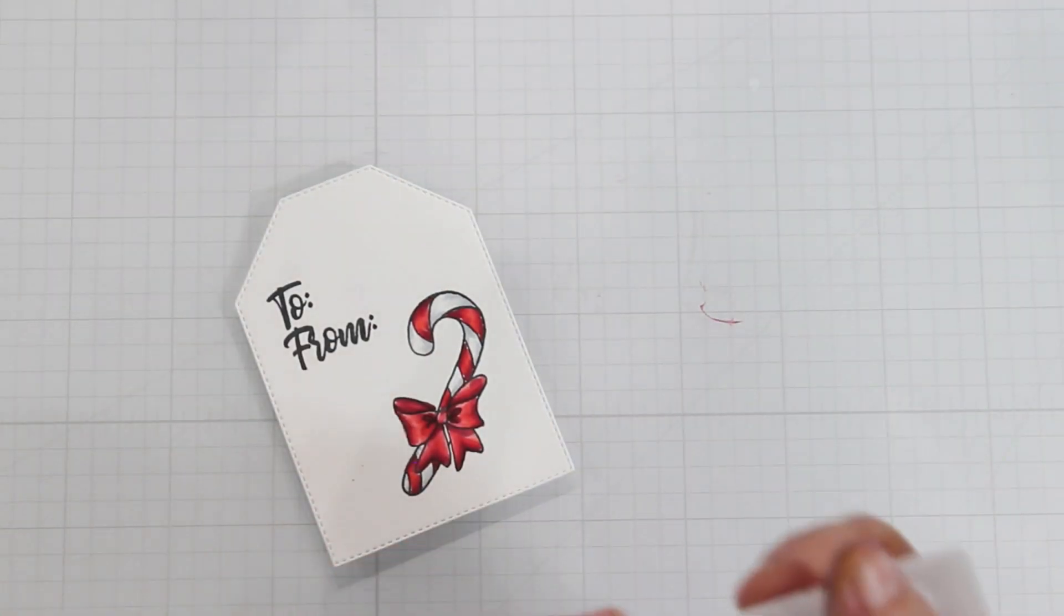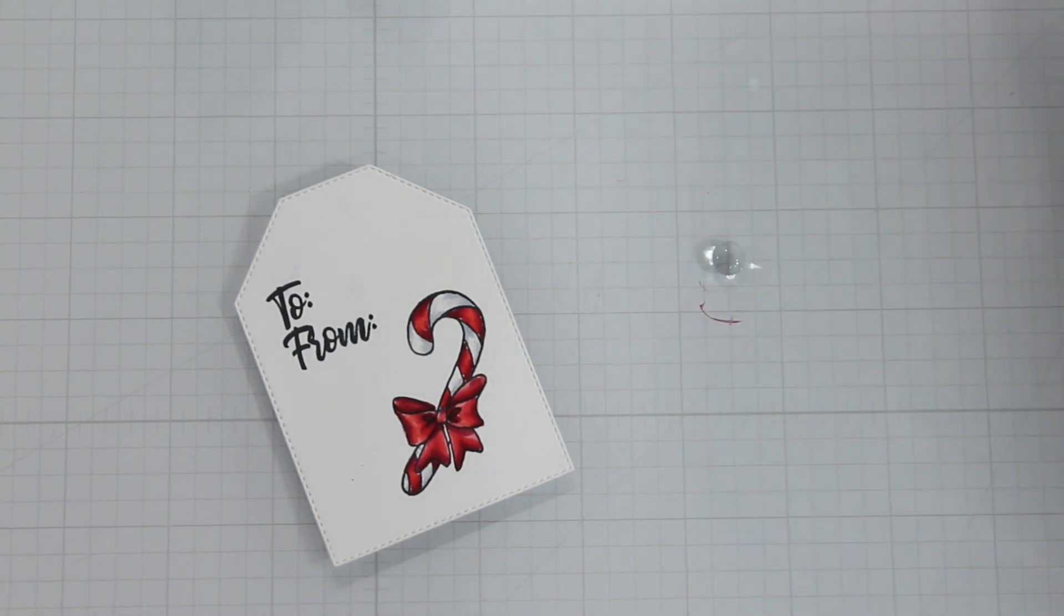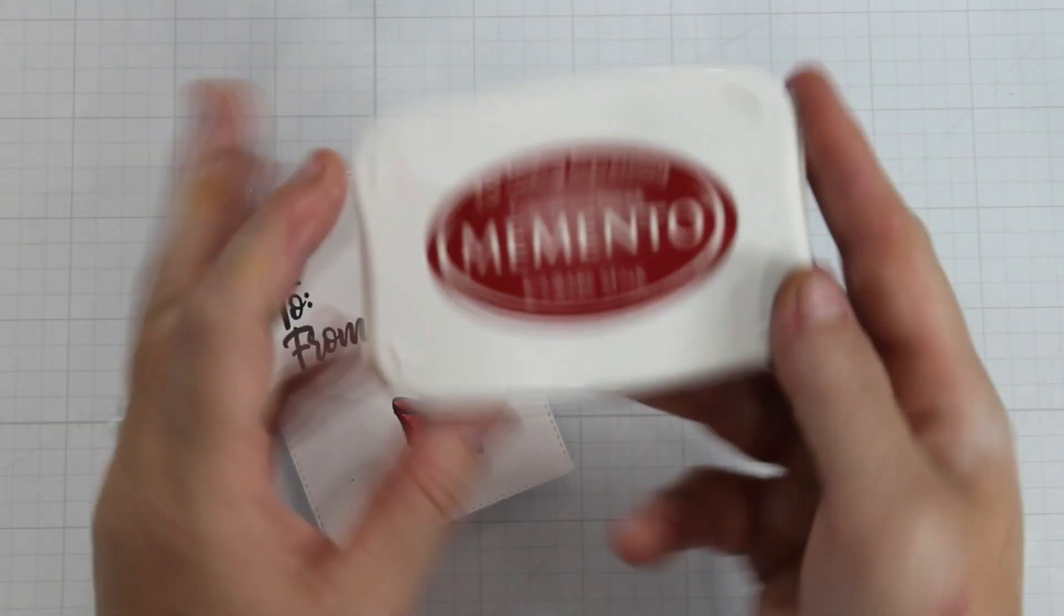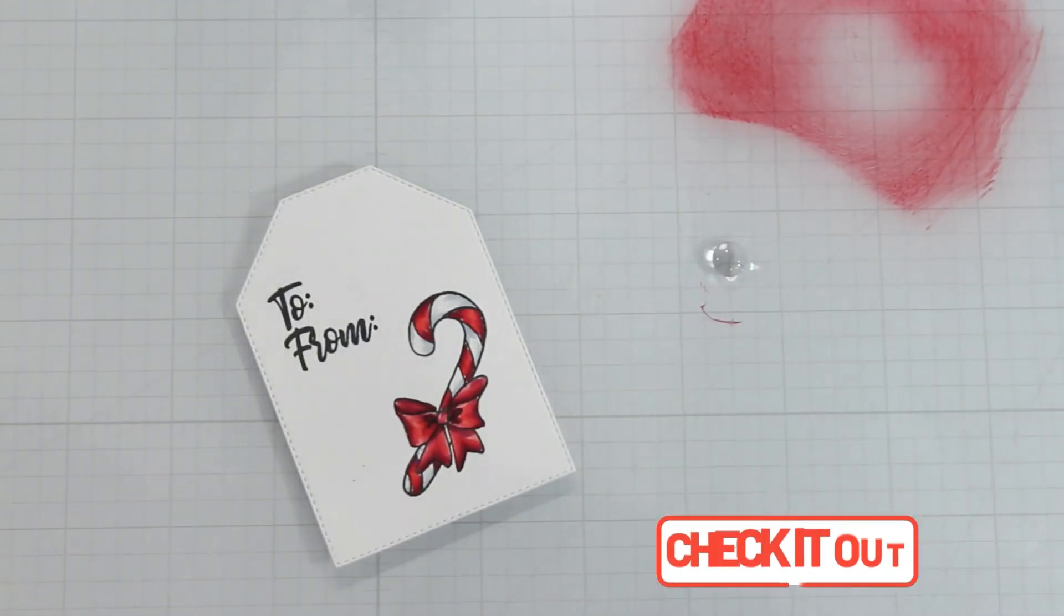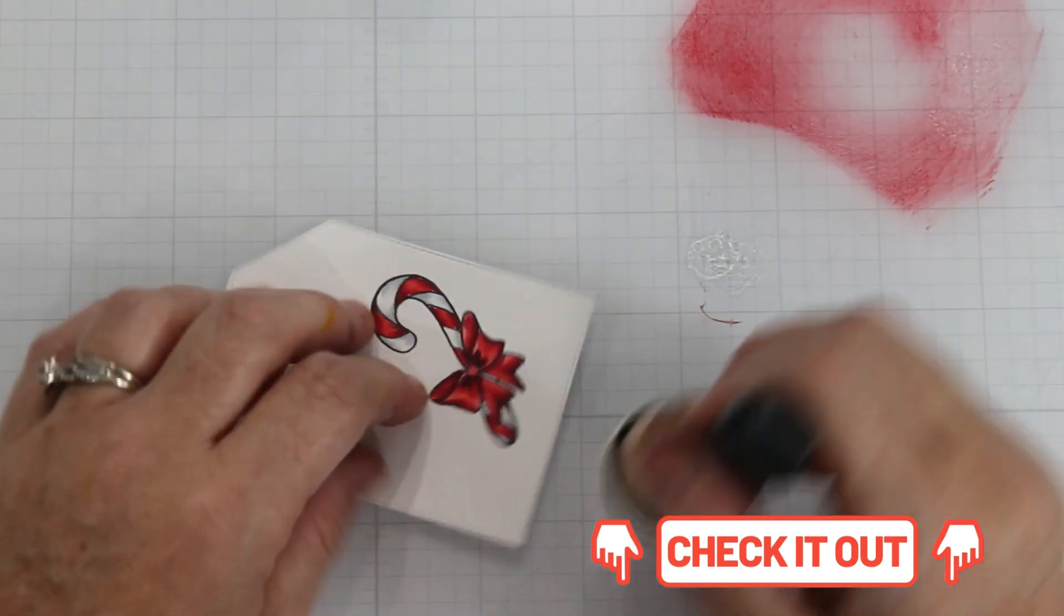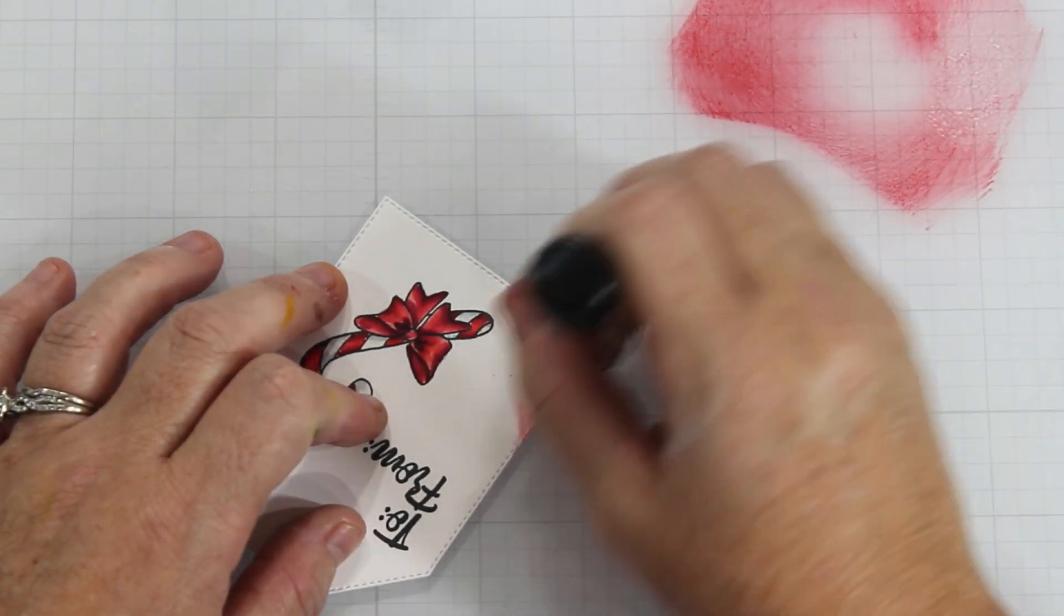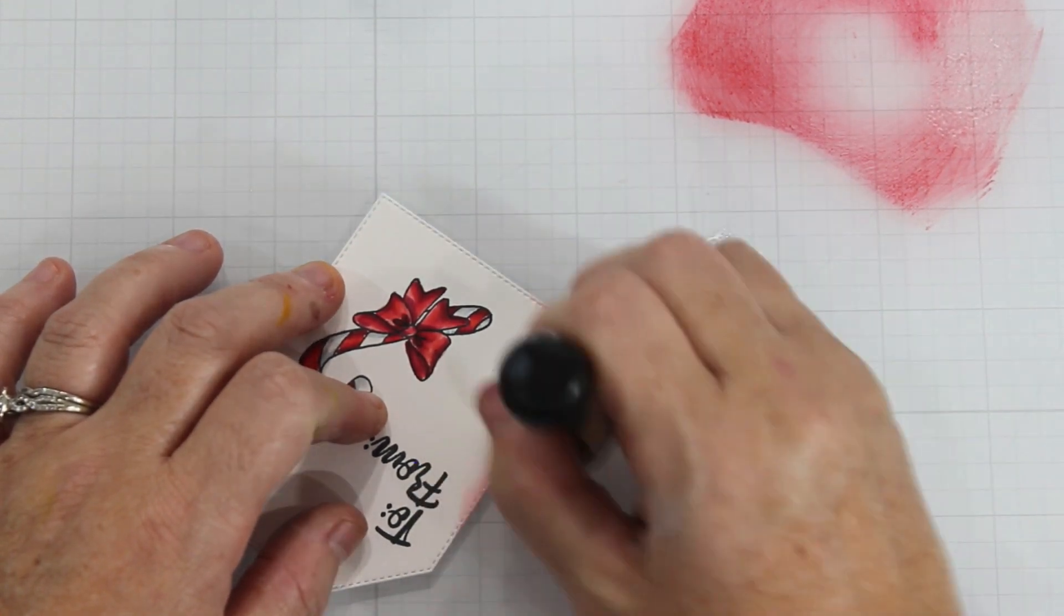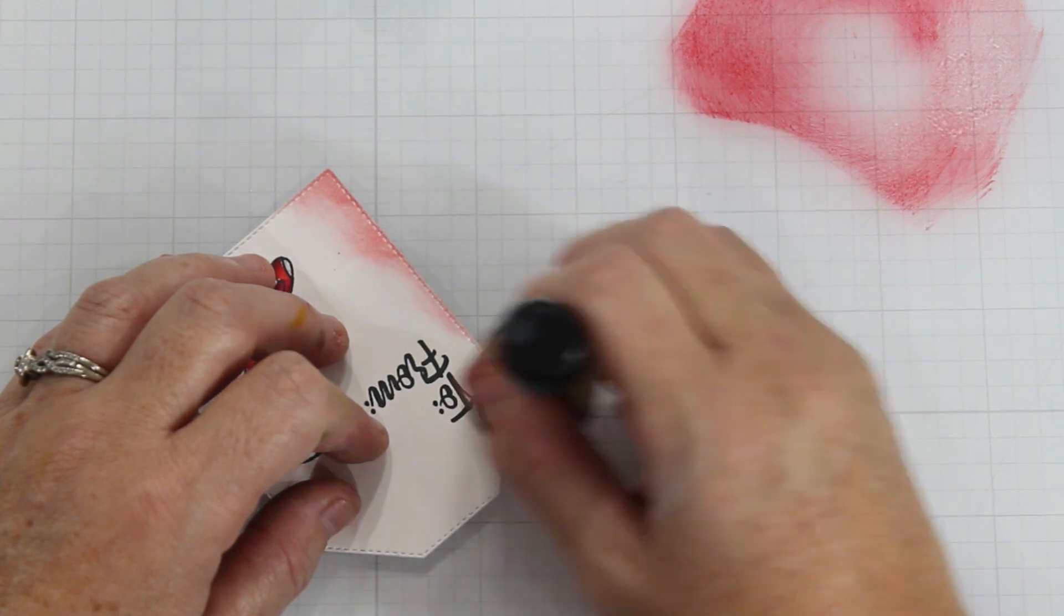This is a new product called dye ink blending solution that you can find in our shop and I'm just using it like a pea-sized portion of it and I'm using rhubarb stalk memento ink and using my dome foam blender I dip into the blending solution and then into my ink and I'm just distressing the edges and you can see how light that is.